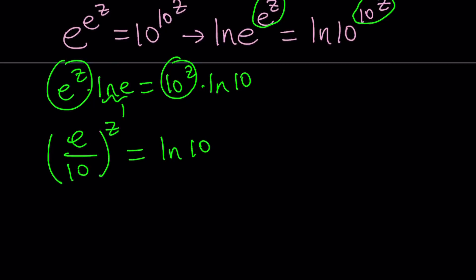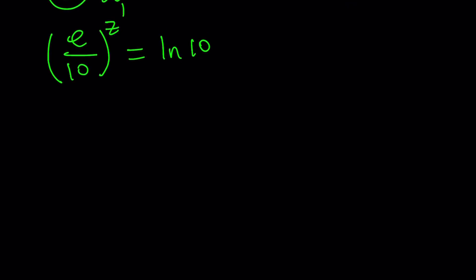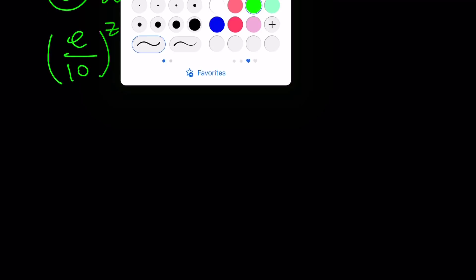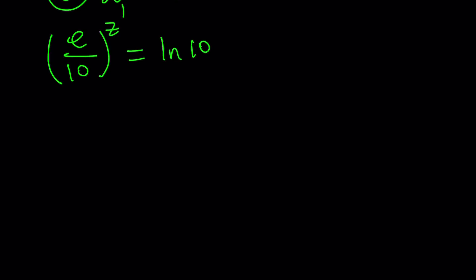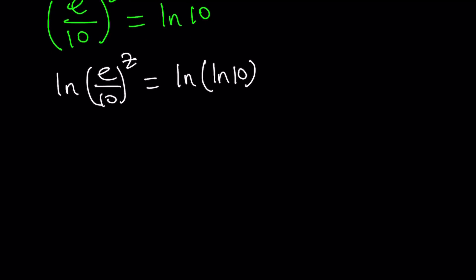Now remember, ln 10 is a constant. Z is in the exponent. So that means I have to use logs. If your variable is in the exponent, you must use logs. So let's go ahead and ln both sides one more time. And that gives us ln e over 10 to the power z equals ln ln 10. So it's kind of like ln of ln. Awesome. Now we can go ahead and bring this z to the front. And that gives us z times ln e over 10 equals ln ln 10.